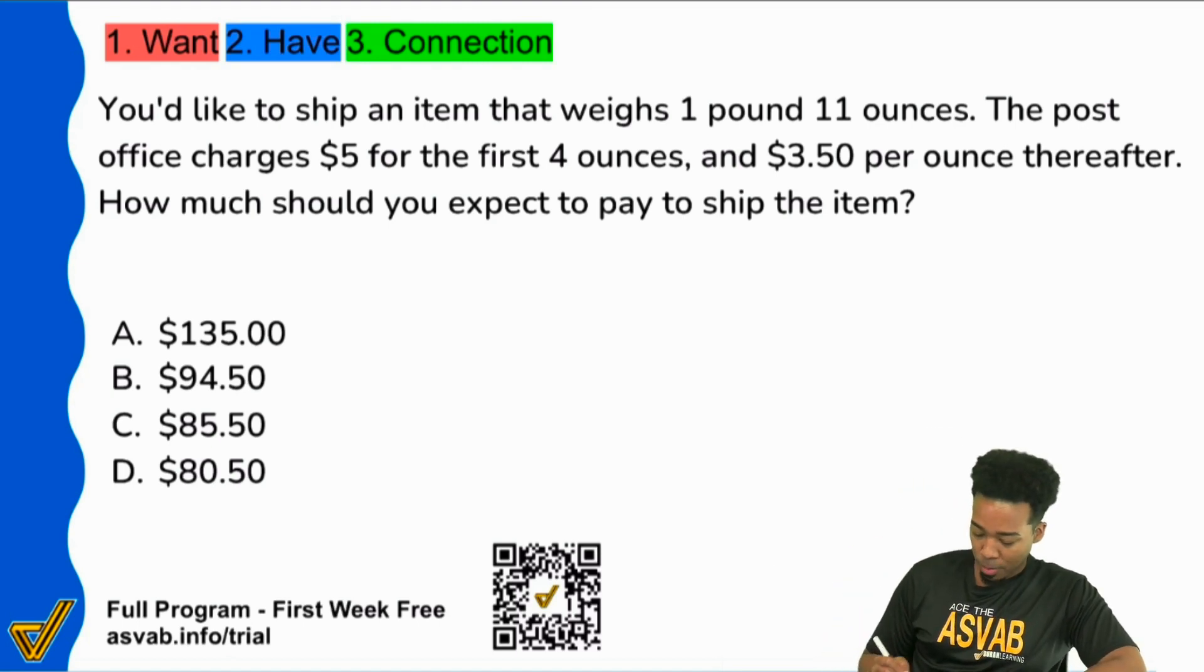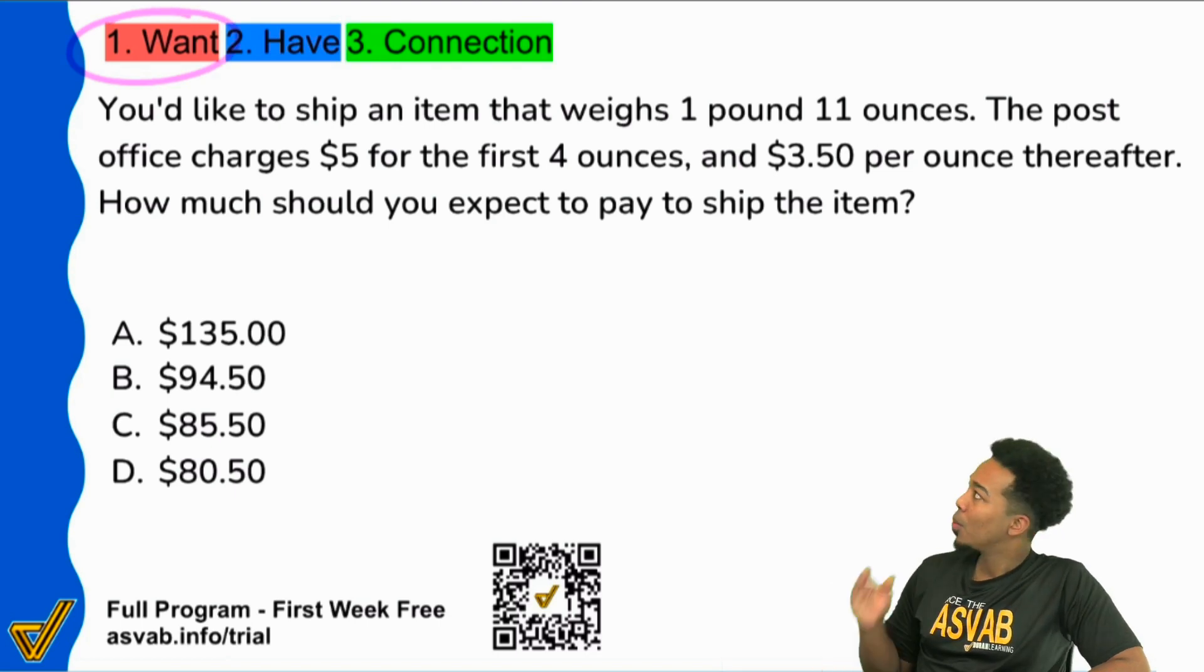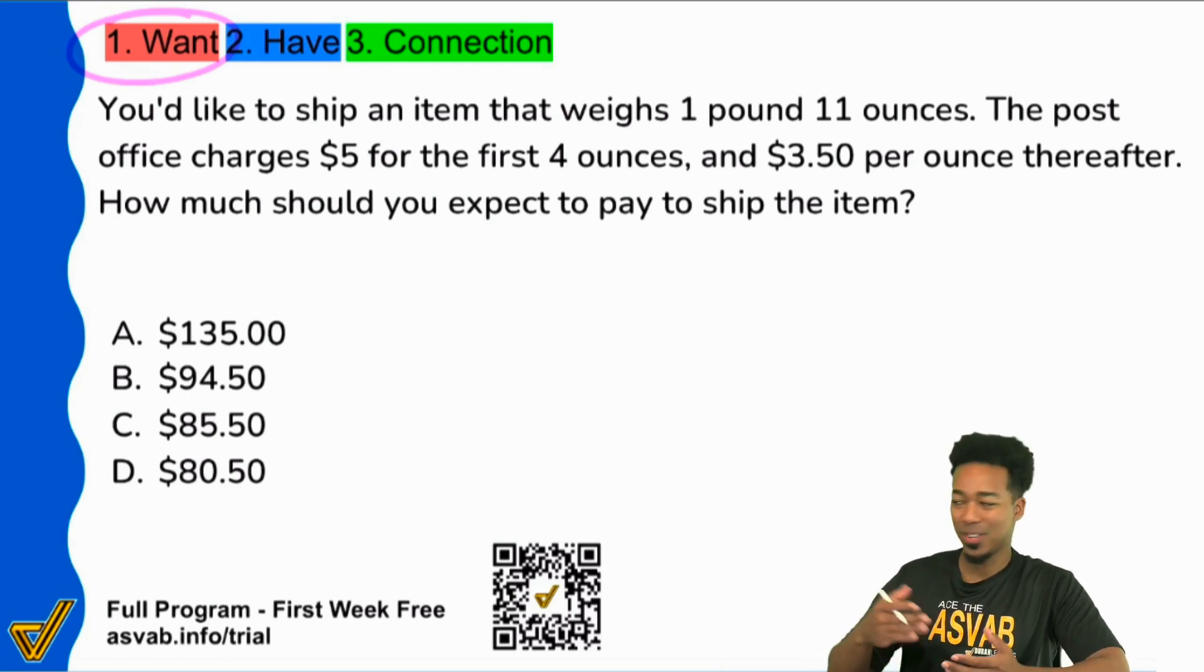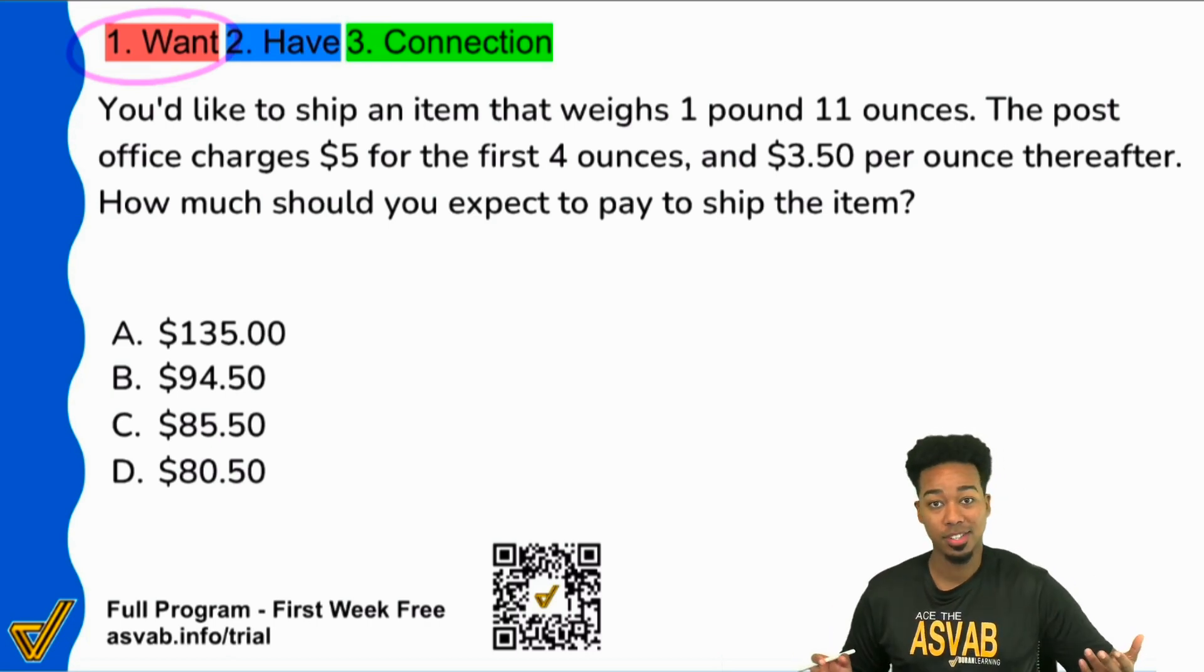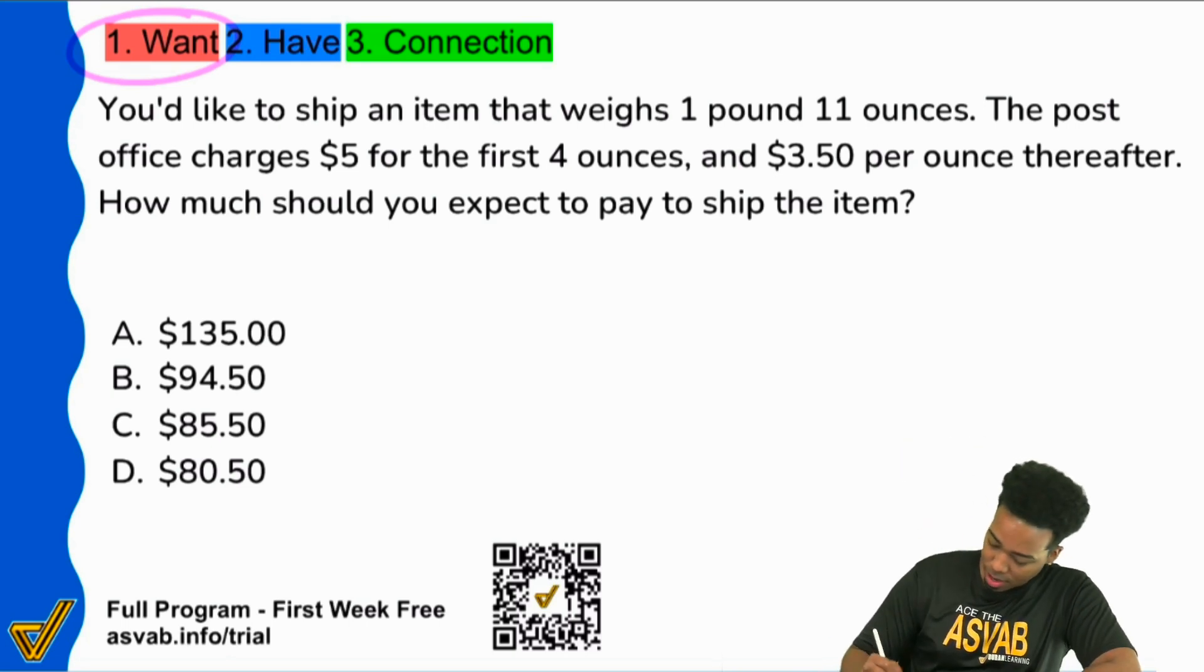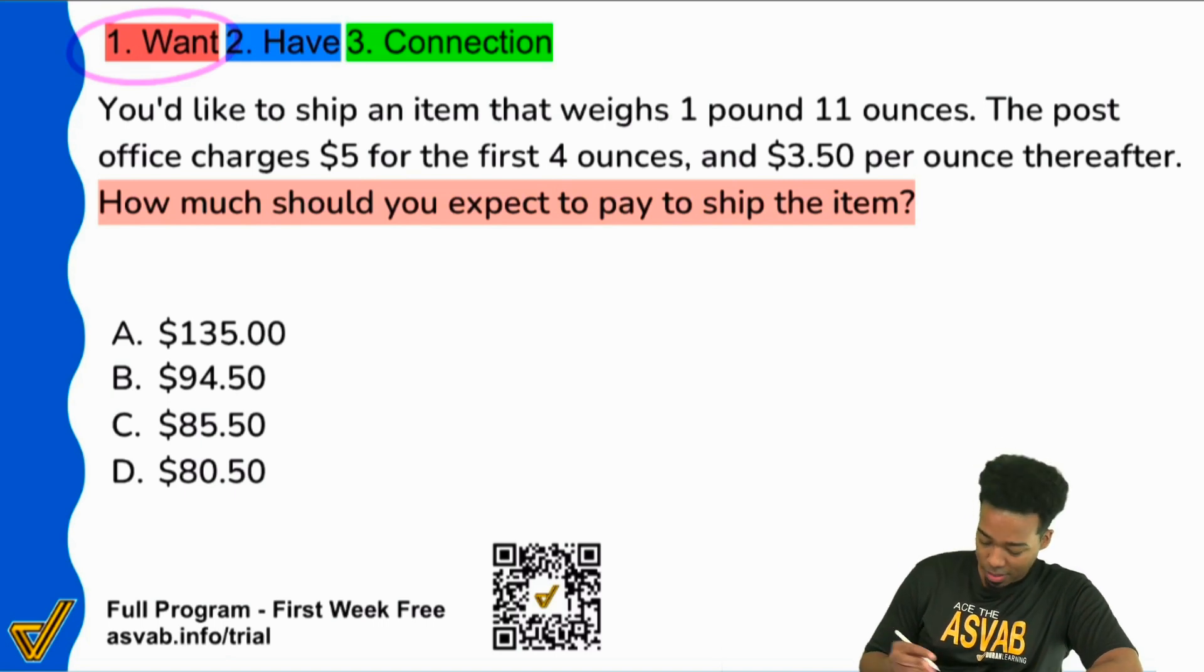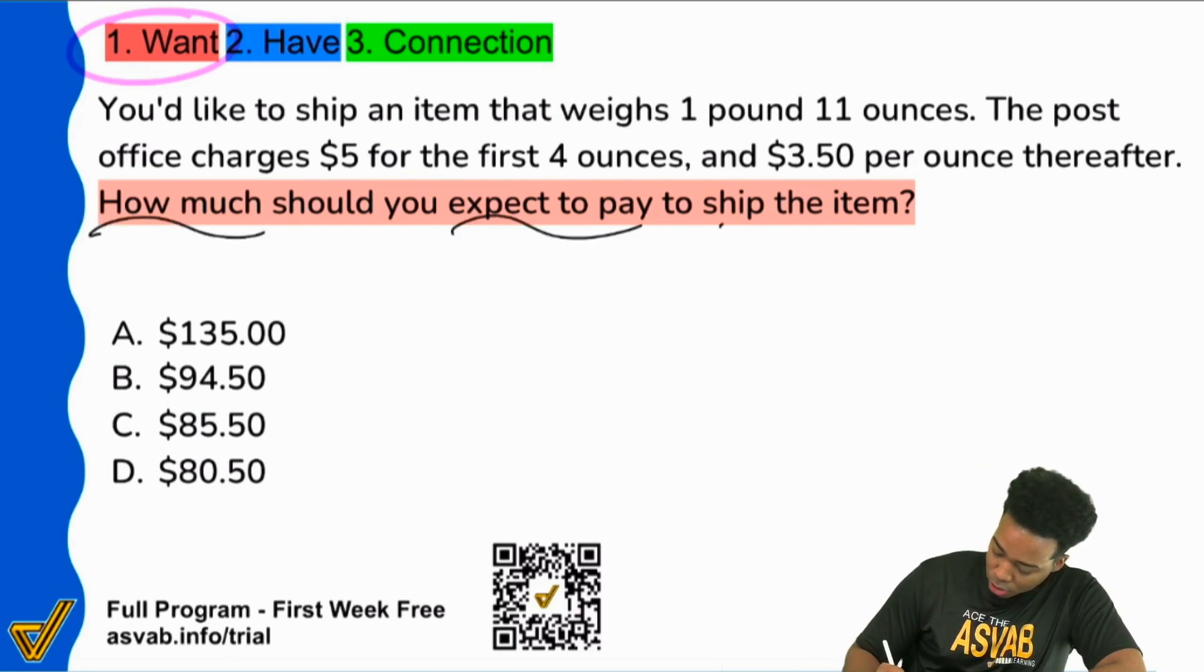First things first. Again, what do we want? Remember that refers to what's the question, what are we looking for, why do I care about this problem. You don't want to start reading through all the information because you don't know what you're supposed to do with it. So the best way to get started is simply to read the question sentence. What do we want? We see it says, how much should you expect to pay to ship the item? I don't know how I'm going to get that number, but I do know that I'm looking for how much it's going to cost to ship an item.